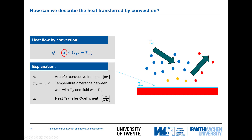To summarize the important quantities: the heat Q is transferred over an area A — the area for convective transport — driven by a temperature potential T_wall minus T_infinity, and the connection between these values is the heat transfer coefficient alpha.